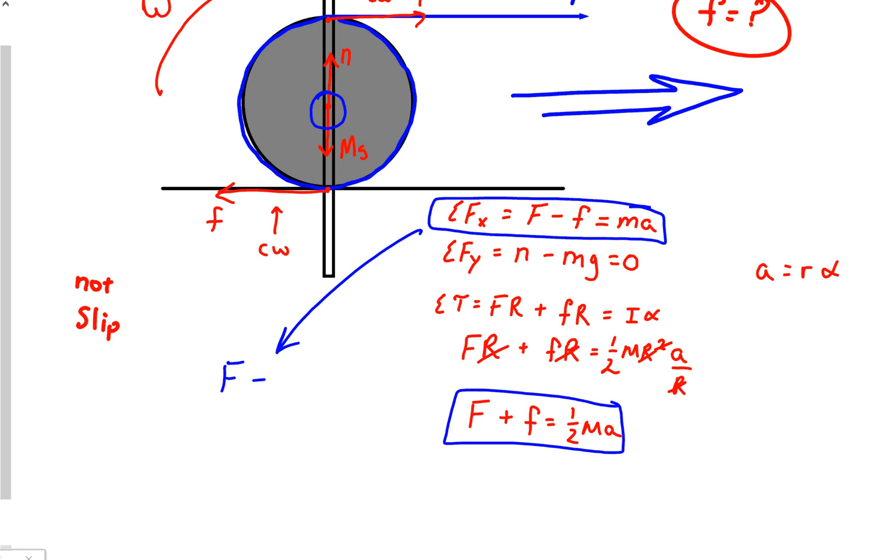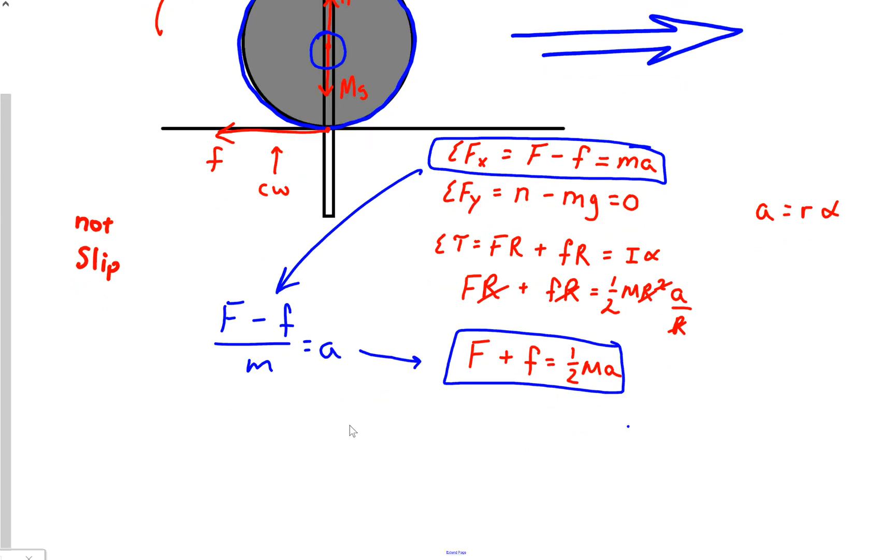Let's grab this guy up here and solve that for acceleration. Because that would be kind of easy. F minus little f over M is equal to A. And now let's substitute that into our torque equation. So we've got F plus little f equals one-half M times F minus F over M.